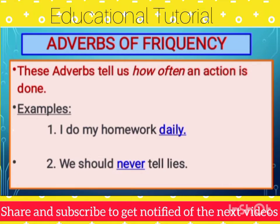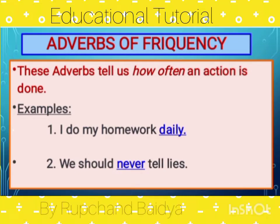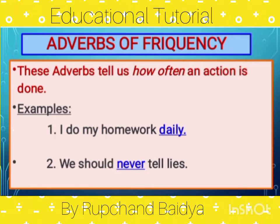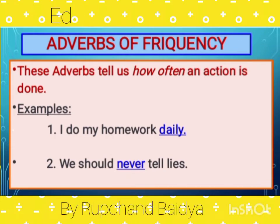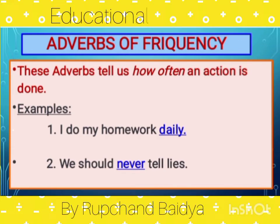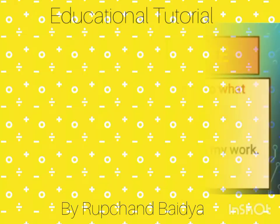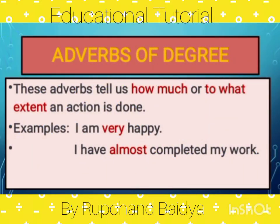Now we have adverbs of frequency. These adverbs tell us how often an action is done. Look at the examples: 'I do my homework daily' — how often? Daily. So 'daily' is an adverb of frequency. In the second example, 'We should never tell lies' — how often should we tell lies? Never. So the word 'never' is an adverb of frequency.